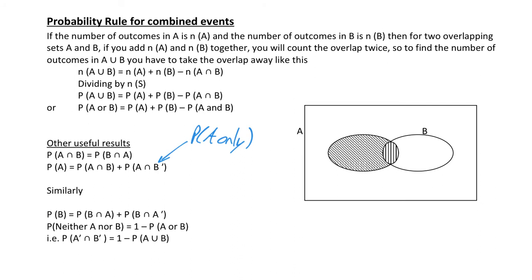Likewise, your probability of B is equal to the probability of B and A — which is exactly the same as the probability of A and B — plus the probability of B and not A. You could say that this bit means the probability of B only, so no overlap. The probability of neither A nor B means 1 minus the probability of A union B, because neither A nor B is outside both circles — so probability of not A and not B equals 1 minus the probability of A or B, or A union B.